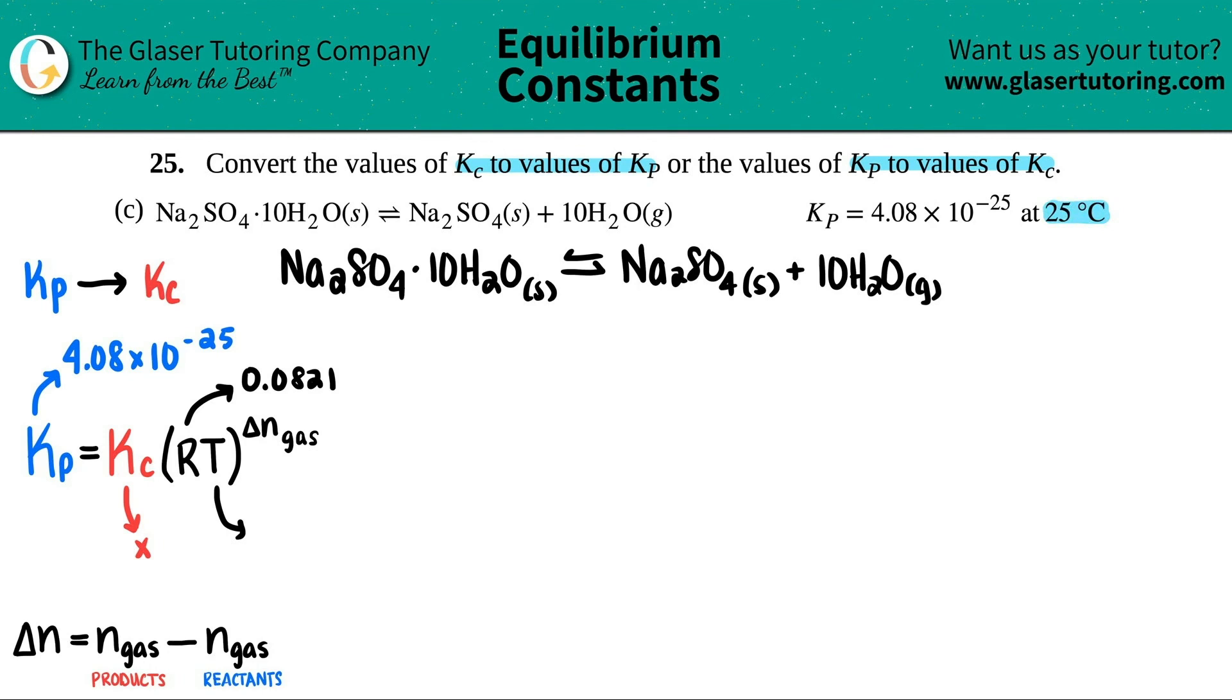They gave you a Celsius temperature, 25 degrees Celsius. So how do I go from Celsius to Kelvin? I just add 273. So 25 plus 273 is 298. So now I have 298 Kelvin. And that's the number that's going to go here, 298.